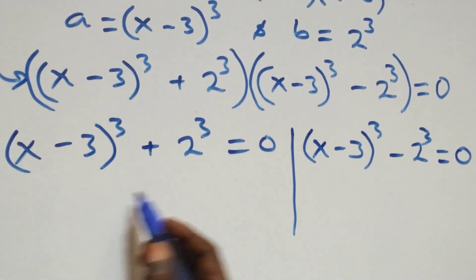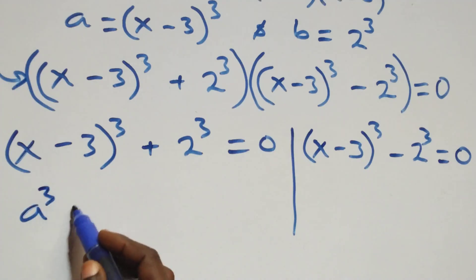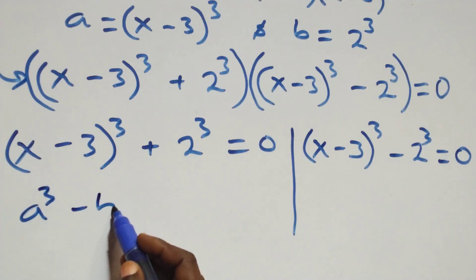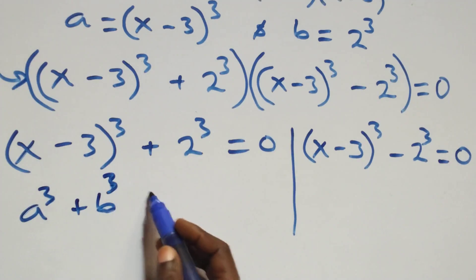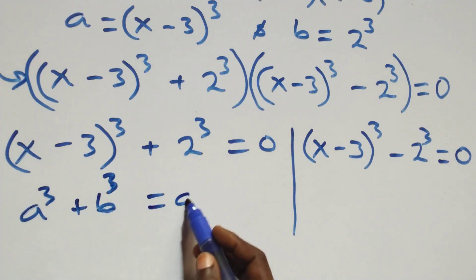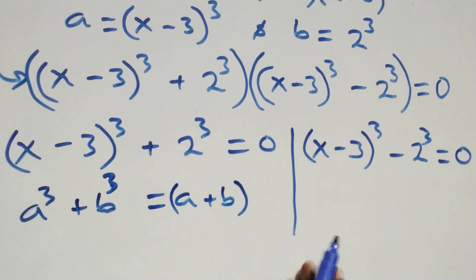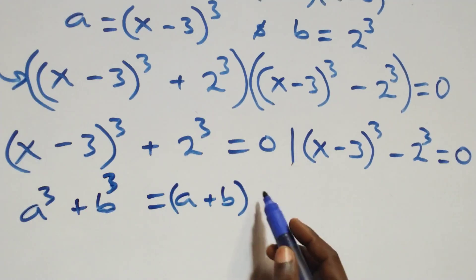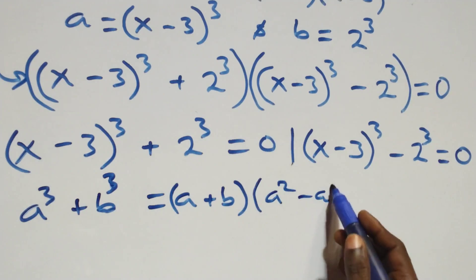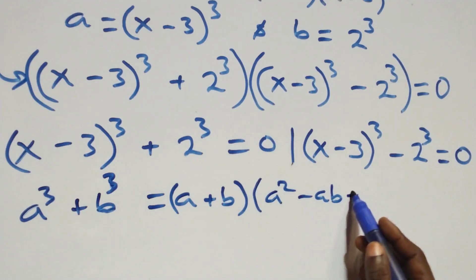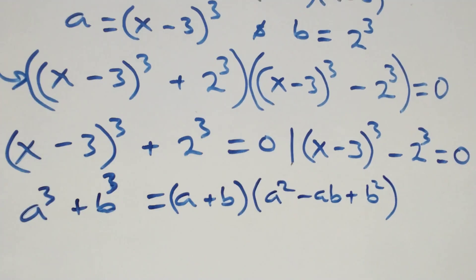Then, solving on this side, this follows: when we have a raised to power 3 plus b raised to power 3, it is the same thing as a plus b, into brackets, then open brackets, a square, minus ab, plus b square.